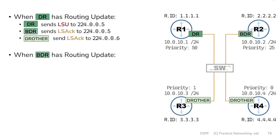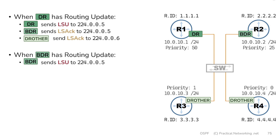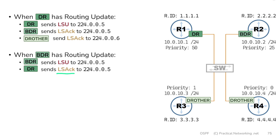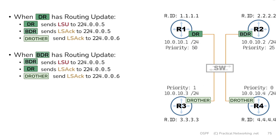Next, we'll show you what happens when the BDR has a routing update. Remember that the BDR already has a full neighbor adjacency with all other routers on this link, which means the BDR can also directly send the update to every router using the all-OSPF-routers multicast address 224.0.0.5 — meaning everybody on the link receives this update. This will prompt the DR to send an acknowledgement to every router on the link, and the DR-others will send an acknowledgement to just the DR and BDR multicast address. Notice these two sequences are essentially identical except the DR and the BDR are switched.